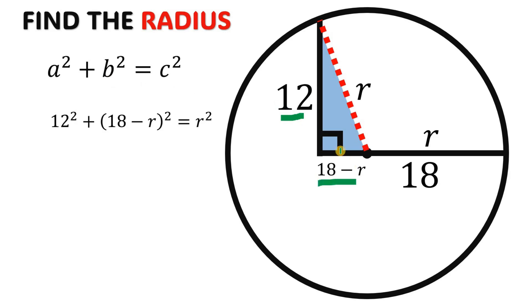b is 18 minus r, and c, the hypotenuse, is r. Now solving this equation: 12 squared plus 18 minus r quantity squared equals r squared. We can now solve for the value of r. So let's simplify: 12 squared is 144.